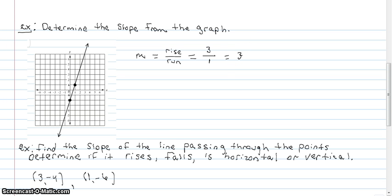Now, the next example: find the slope of the line passing through the points. Determine if it rises, falls, is horizontal, or vertical. With these ordered pairs, I'm going to use the slope formula. M equals y2 minus y1 over x2 minus x1. I'm going to label this point x1, y1, and this one x2 and then y2.